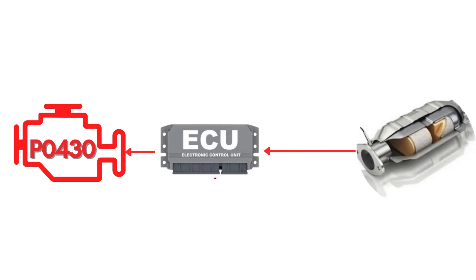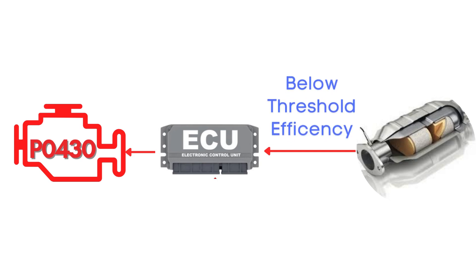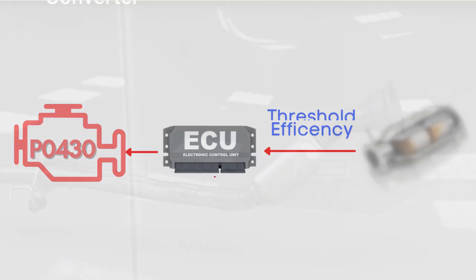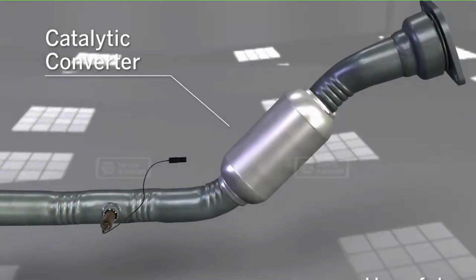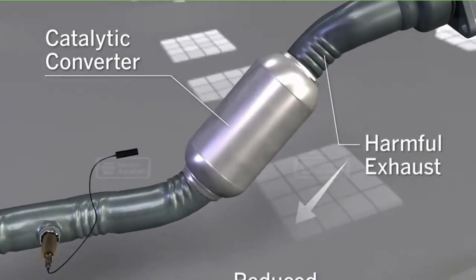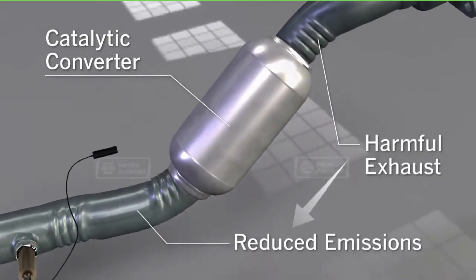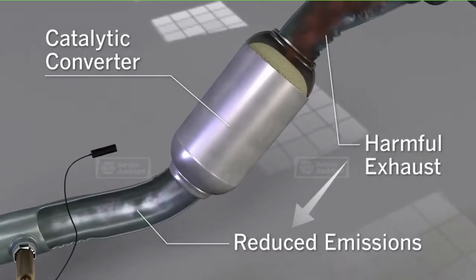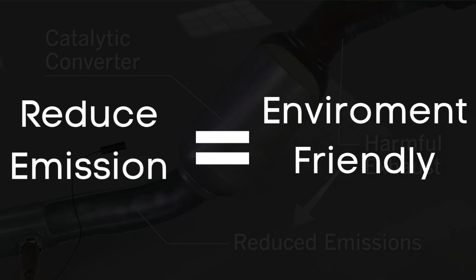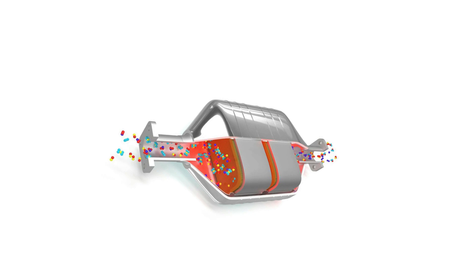First things first, let's break down what the P0430 code actually is. This code gets triggered when the engine control module detects a condition that indicates the catalytic converter is operating below the minimum allowable efficiency threshold. The purpose of a catalytic converter is to use a chamber called a catalyst to change the harmful compounds from an engine's emissions into environmentally safe gases.